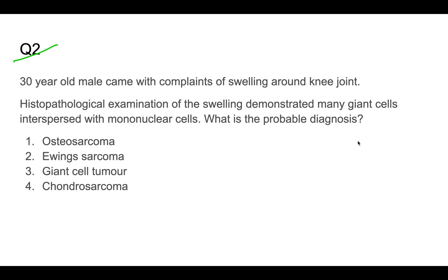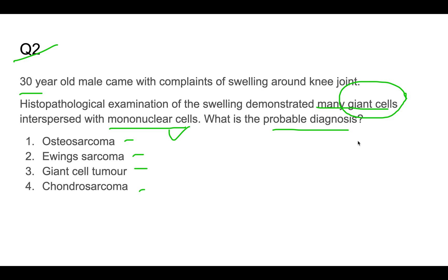The second question is based on a microscopic picture. A 30-year-old male came with complaints of swelling around the knee joint. Histopathological examination shows many giant cells along with mononuclear cells. What is the probable diagnosis? The options are osteosarcoma, Ewing sarcoma, giant cell tumor, and chondrosarcoma.